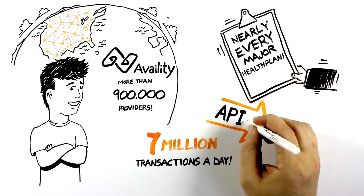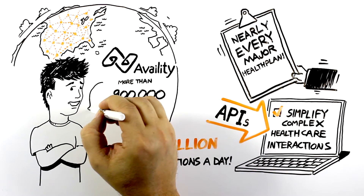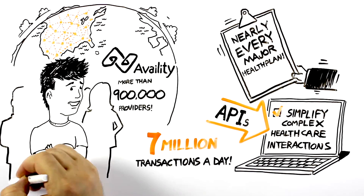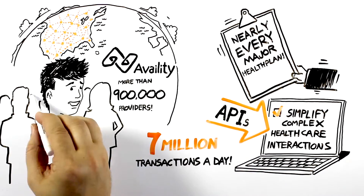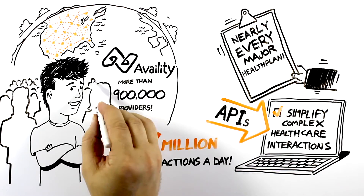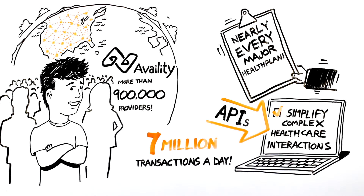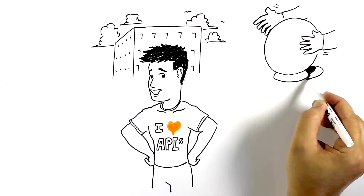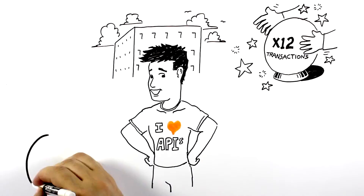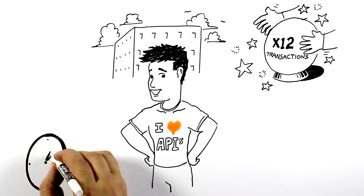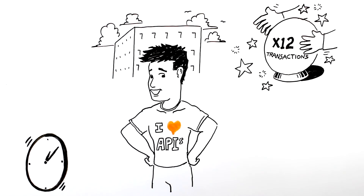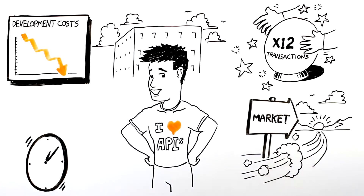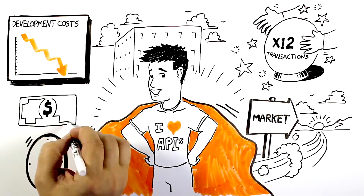Availity's APIs simplify complex healthcare interactions, allowing Josh to focus on delivering great apps, tools, and services. Availity is adding new APIs regularly to meet the needs of developers like Josh everywhere. Now Josh doesn't have to hire additional healthcare specialists to demystify highly codified X12 transactions or spend thousands of hours creating customized connectivity to hundreds of insurance companies. Josh can reduce his development costs and accelerate his speed to market, making him a hero and his company lots of money.